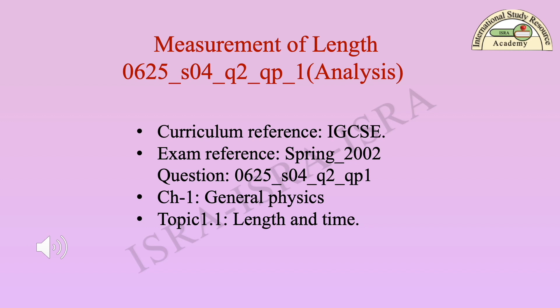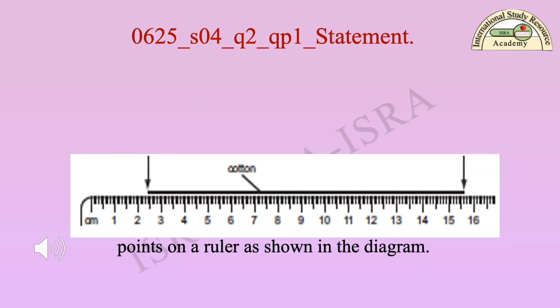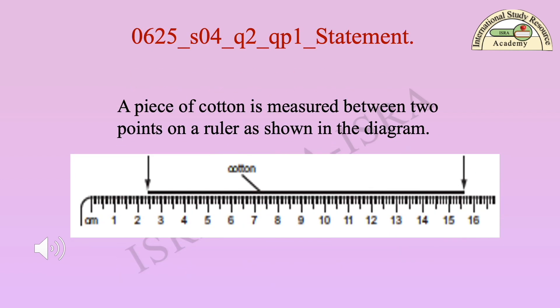This question is related to distance, height or thickness. It is a selected response or multiple choice question. According to the statement, a piece of cotton is measured between two points on a ruler as shown in the diagram.